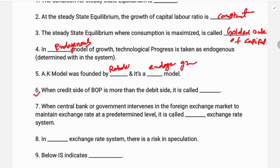The sixth question: when the credit side of the BOP is greater than the debit side — that is, plus is greater than minus — that is called BOP surplus. The seventh question: when the central bank or government intervenes in the foreign exchange market to maintain the exchange rate at a predetermined level, it is called the fixed exchange rate system.